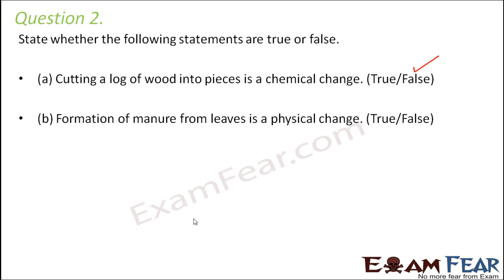Formation of manure from leaves is a physical change — this statement is false. To prepare manure, leaves and vegetable wastes are taken together, mixed, kept with some water, and allowed to rot completely. A lot of chemical changes take place during this process, and new substances rich in organic matter are formed. So this is a chemical change, not a physical change.